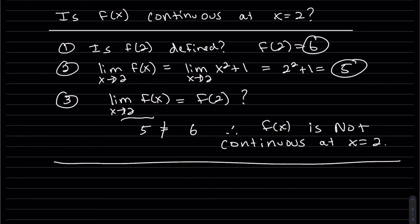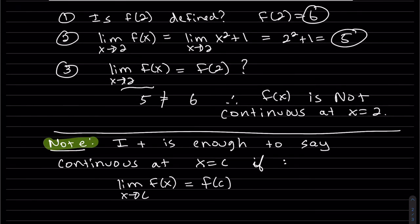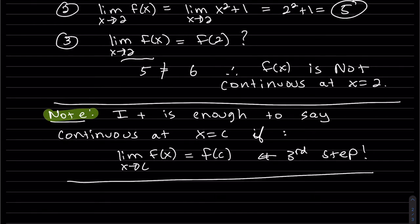Just a note: it is enough to say a function is continuous at c if the limit equation holds true, because it has all the parts — the definition at f of c on the left, and the limit. This is basically the third step in the three-step process. But I do think it's good to use all three steps because it keeps you organized. Step one would be the first, step two the second, and showing they're equal is the third.